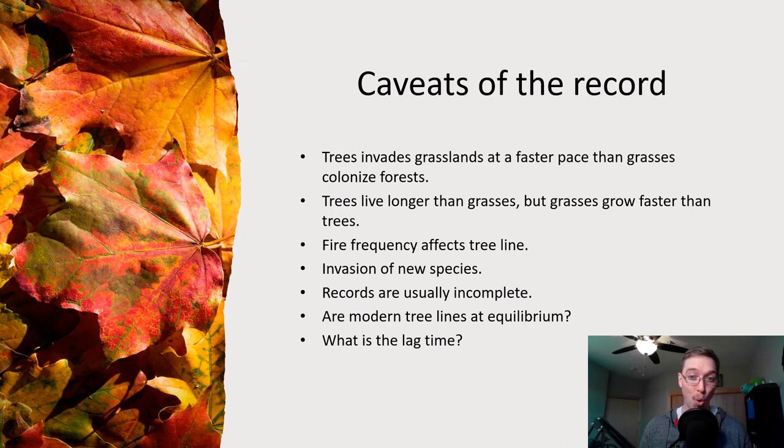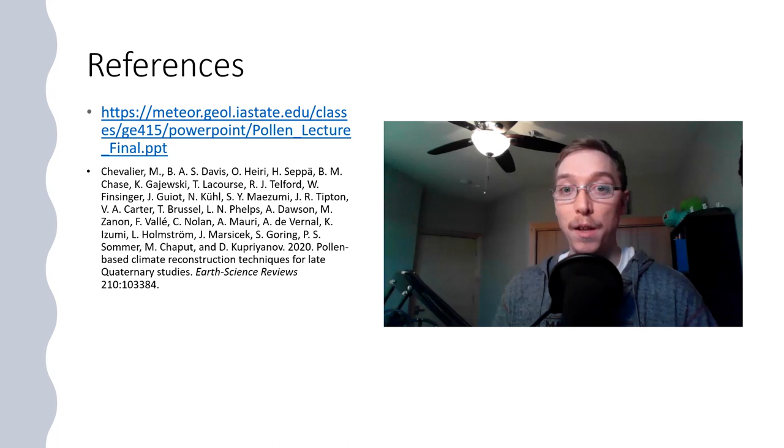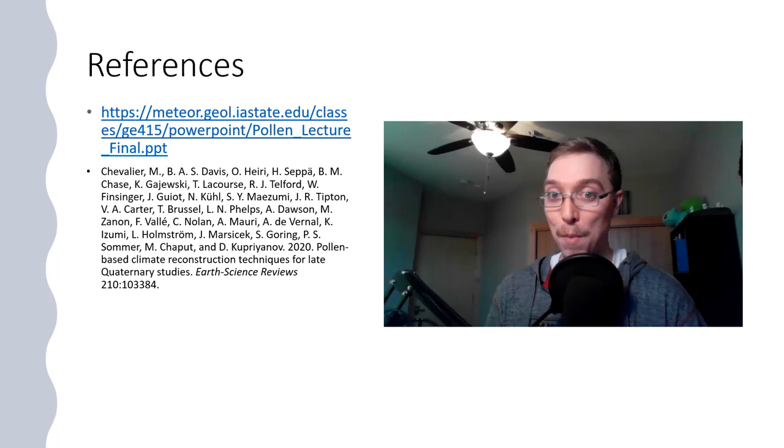So pollen data can be problematic but can also be a really useful tool for us to better understand these past paleoclimates and the distribution and cover of vegetation on our surface. I invite you to look and read through this pollen-based climate reconstruction techniques for late Quaternary studies, this Chevalier paper, a fascinating study to read through. And that's going to wrap up our talk on paleoclimate records for now. Next week we're going into the contemporary and modern climate, so what are we doing, where are we at, and where are we going. I will see you in the next video and I hope you have a great day. Thank you.